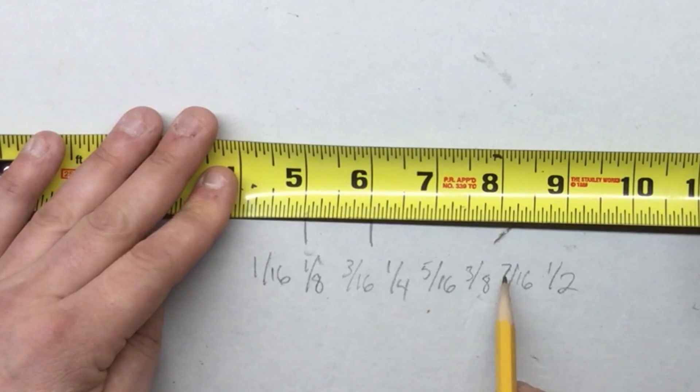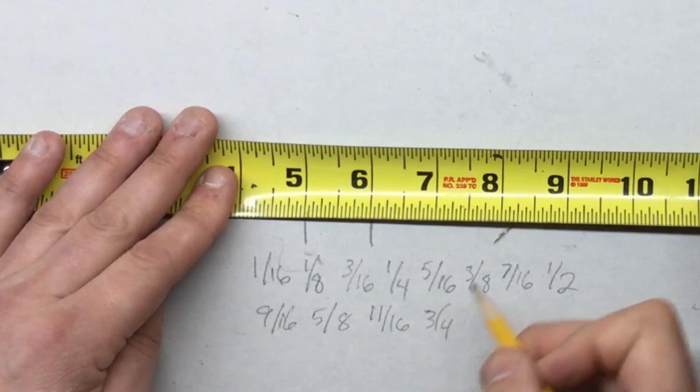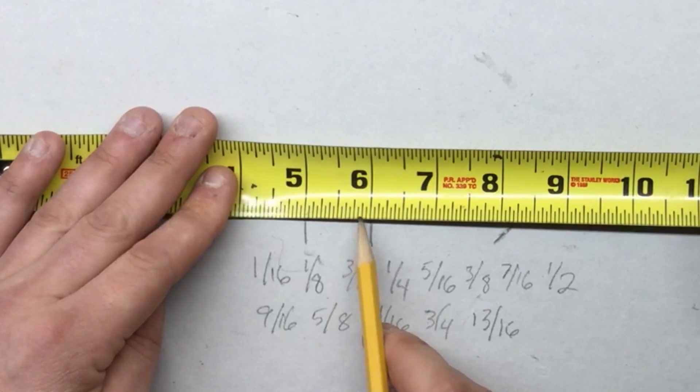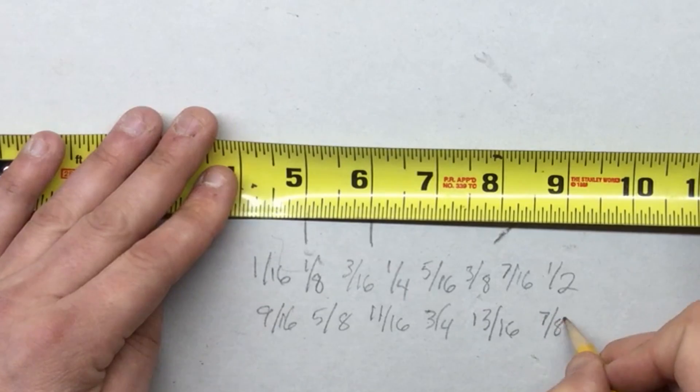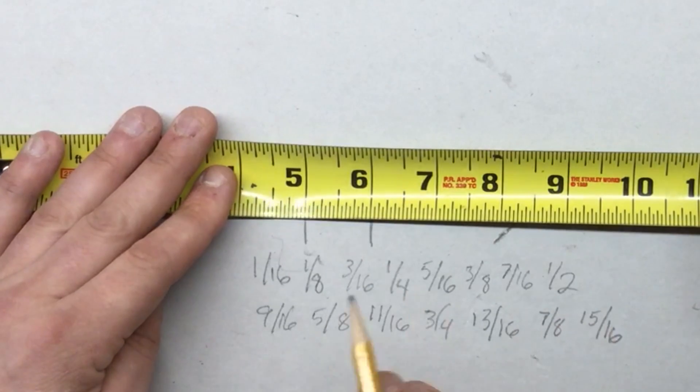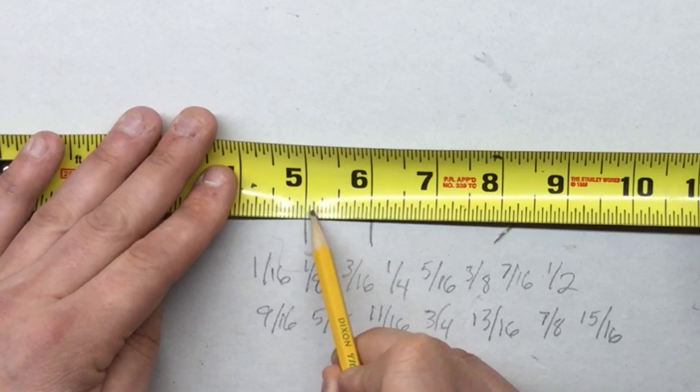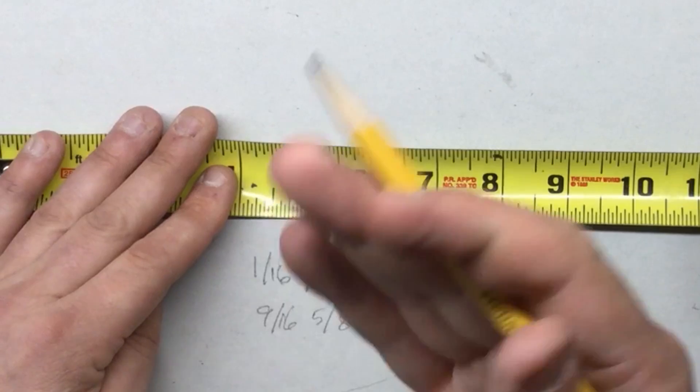Then you have seven sixteenths right here. Then you have a half. After a half is nine sixteenths. After nine sixteenths, you have five eighths, then eleven sixteenths right here. Three quarter right here. Then thirteen sixteenths right here. Seven eighths, and fifteen sixteenths. So it's separated into groups of sixteenths, eighths, quarters, and half. Hopefully that makes sense.